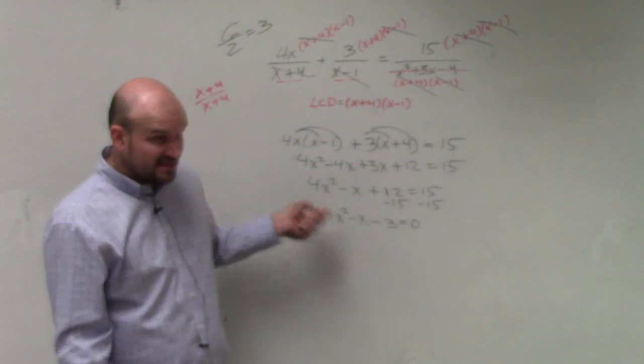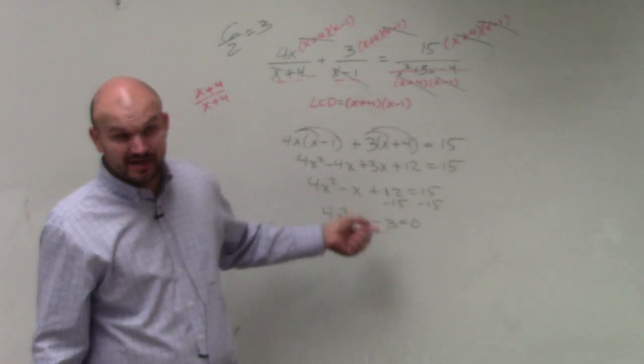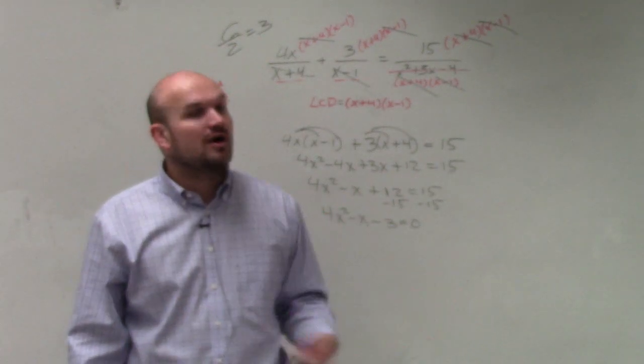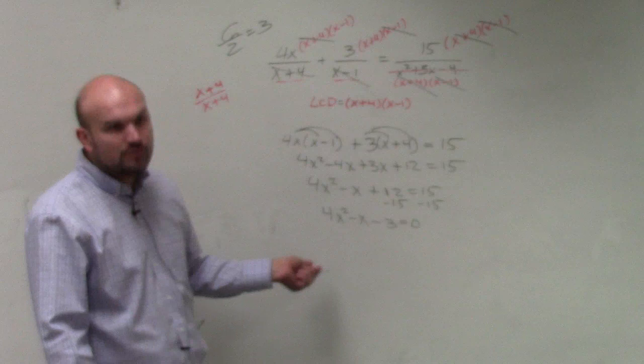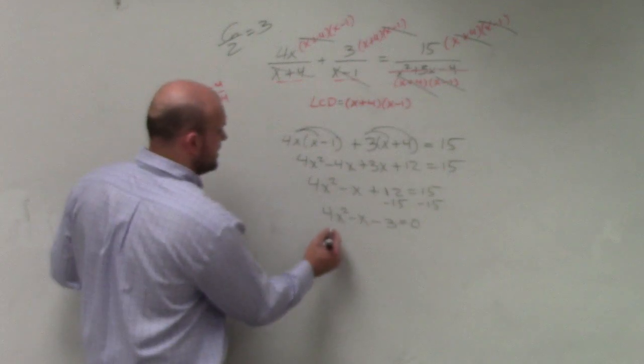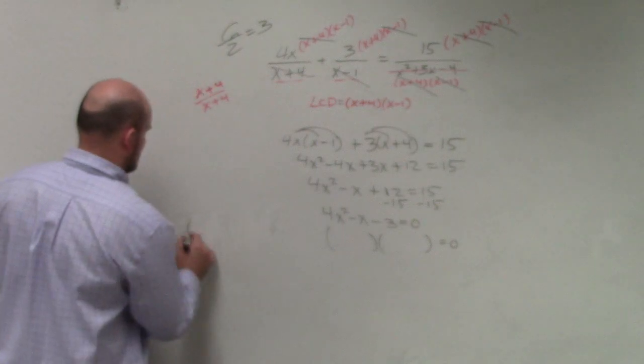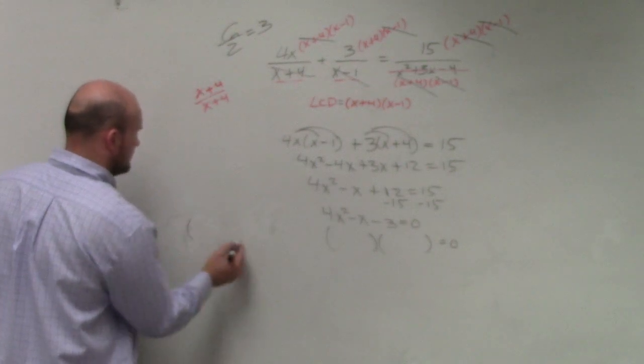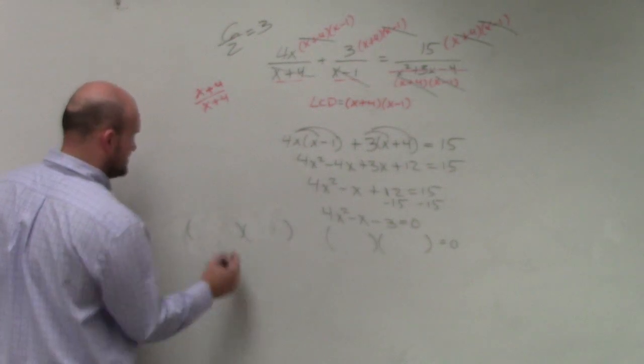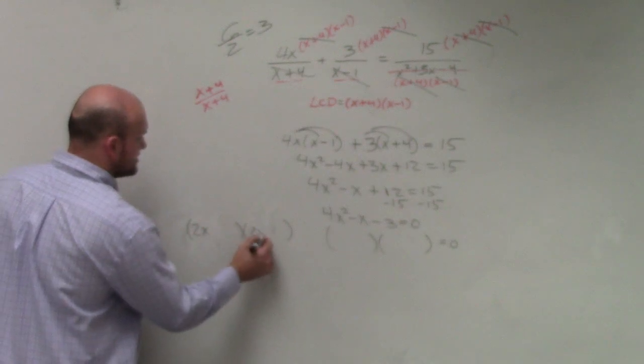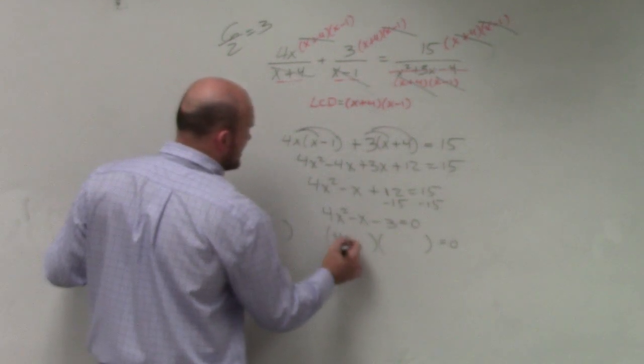I get 4x squared minus x minus 3 equals 0. So now, I need to solve this. Again, this is a quadratic. We should look to factoring first. Or, if factoring doesn't work, you could always do quadratic formula, right? But again, this is going to produce two binomials. So, there's only two options, guys.